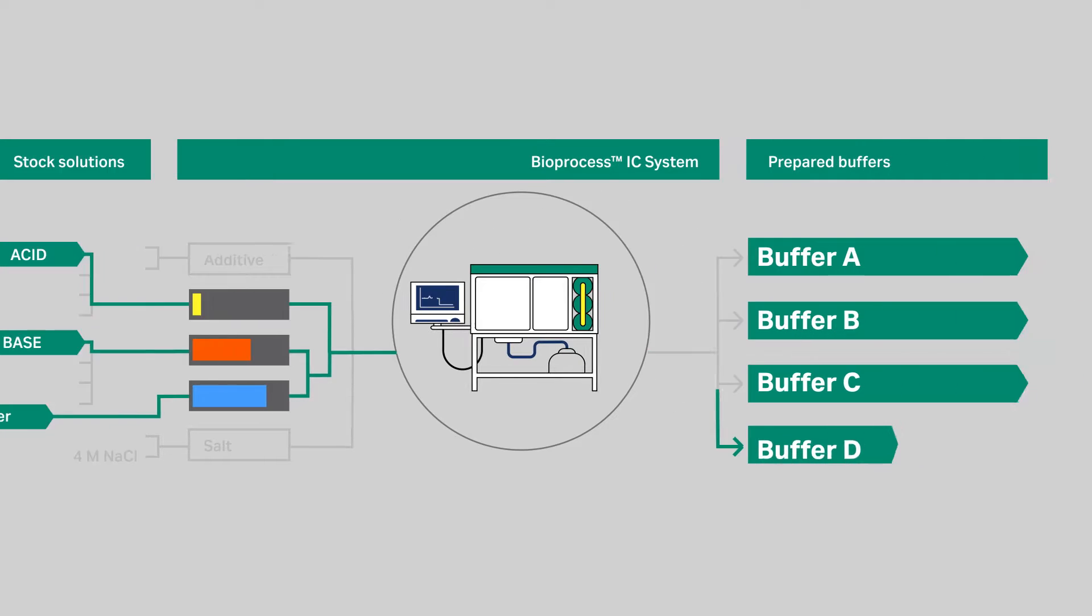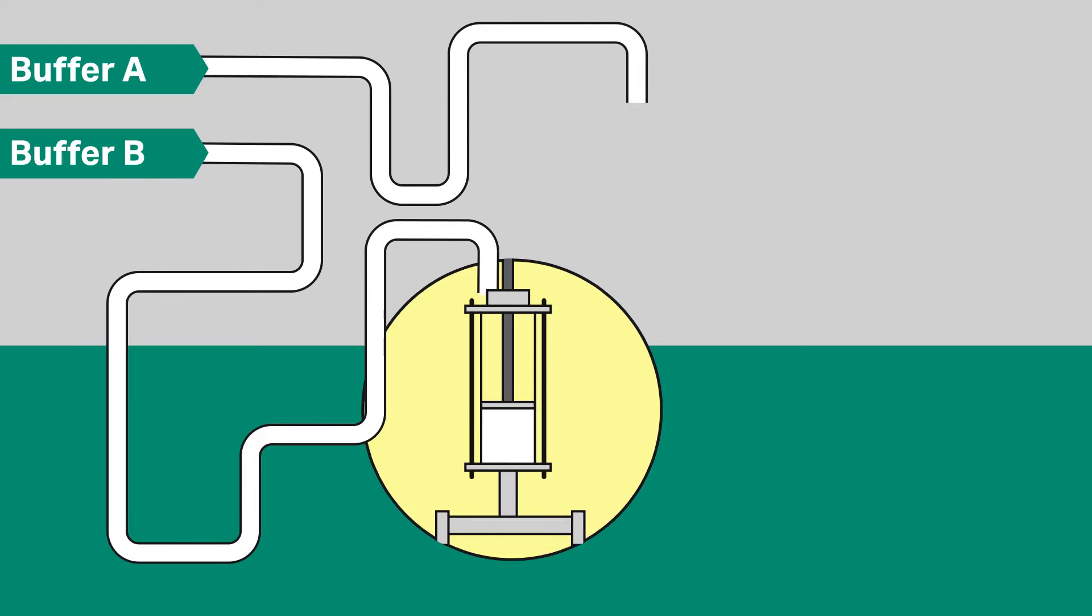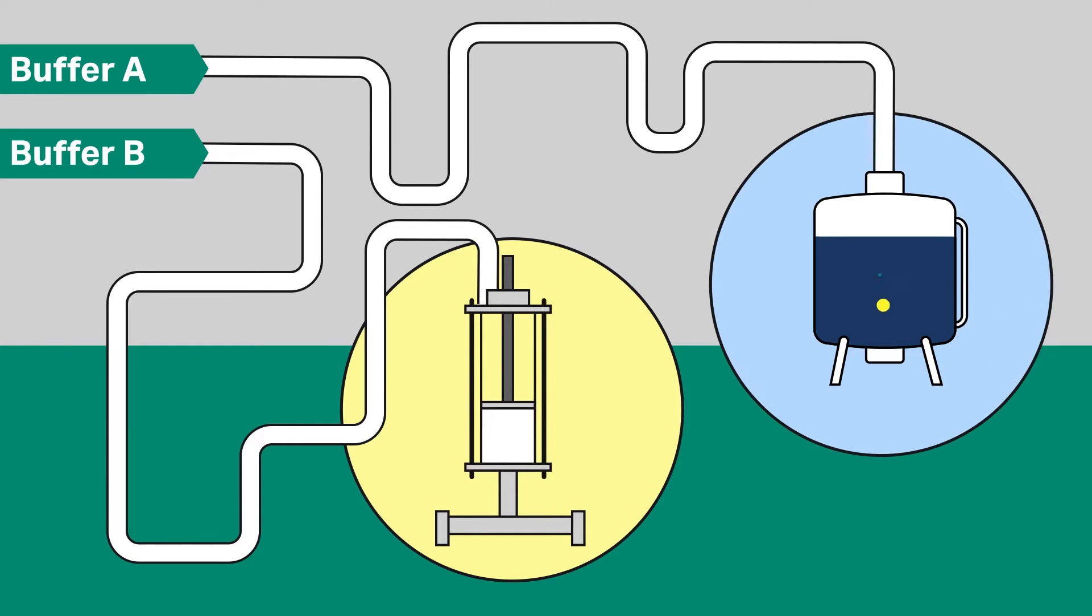The inline conditioning system prepares the buffers sequentially. The inline conditioning system is a combined buffer preparation and chromatography system. The buffers are loaded directly onto the column during a chromatography process or collected into a bag or tank as a standalone buffer preparation setup.